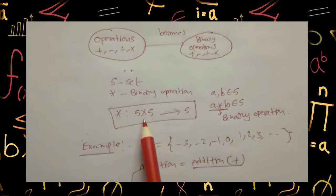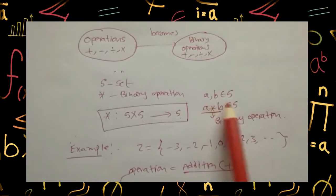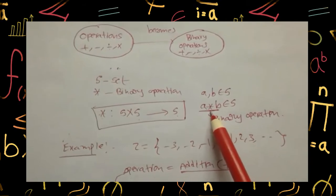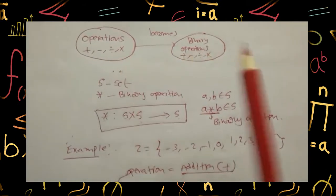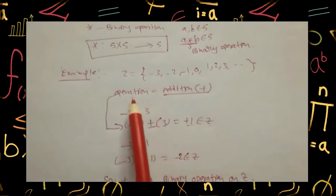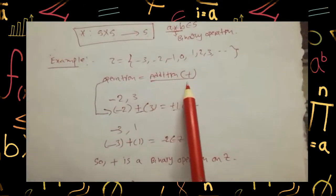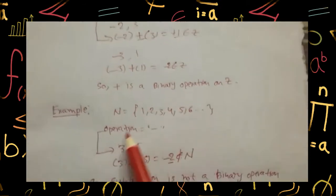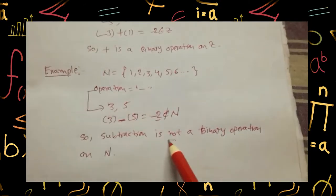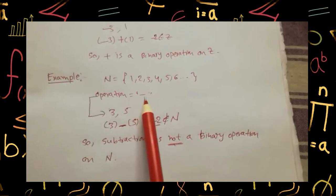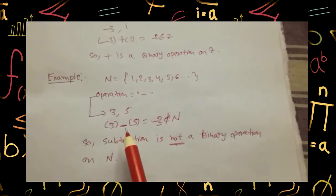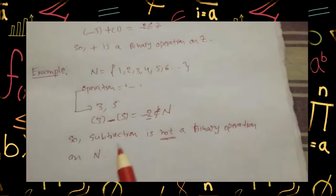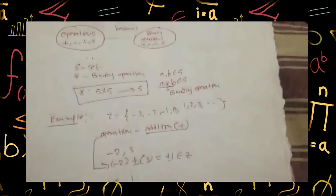That is: let S be a non-empty set, star be an operation — star is a binary operation when star is mapped from S cross S to S. That means if any two elements a, b belong to S, then the result a star b should also be in that set. The operation — whether addition, subtraction, multiplication, or division — is called binary operation. First example: set of integers with addition — adding any two elements gives a result in Z, so addition is binary on Z. Second example: natural numbers with subtraction — three minus five gives minus two, which is not in N, so subtraction is not a binary operation on N.